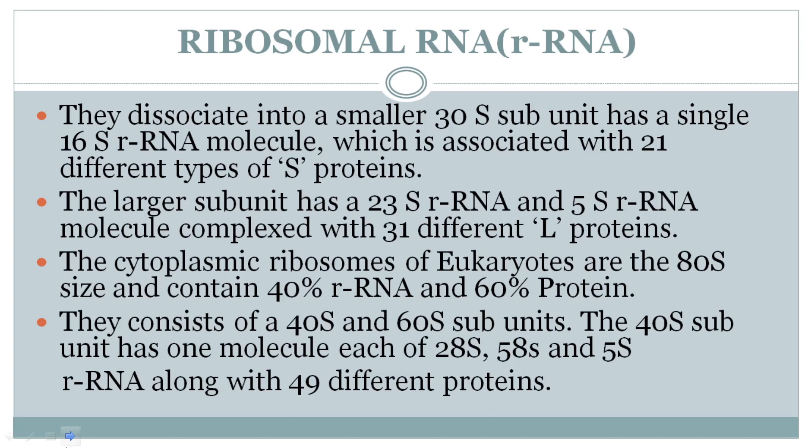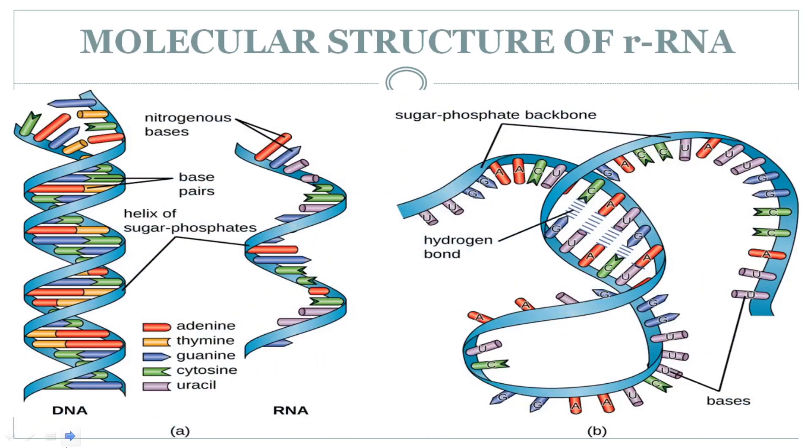In eukaryotic cells, ribosomes are 80S type, containing 40% rRNA and 60% proteins. The 80S ribosome has two subunits: a 40S subunit and a 60S subunit, where S stands for Svedberg units. The 60S subunit contains 28S rRNA, 5.8S rRNA, 5S rRNA, and 49 proteins.